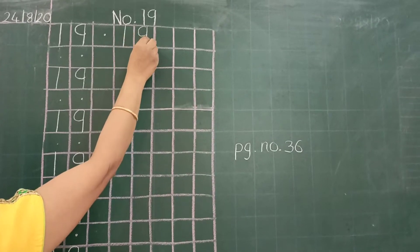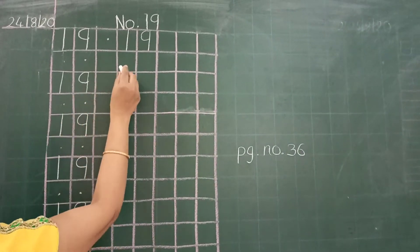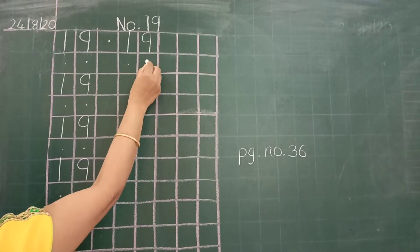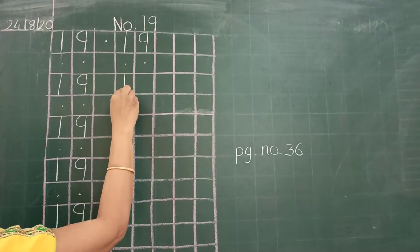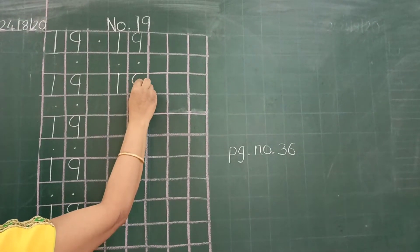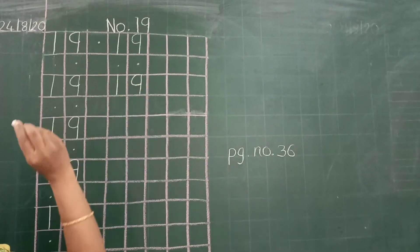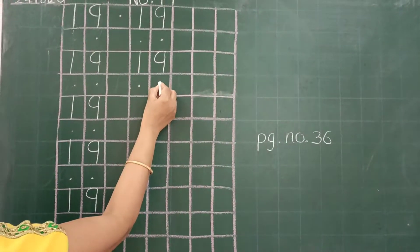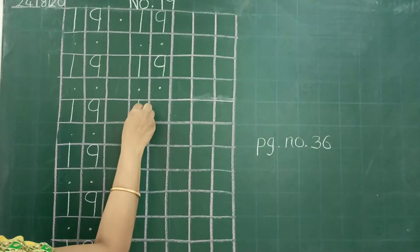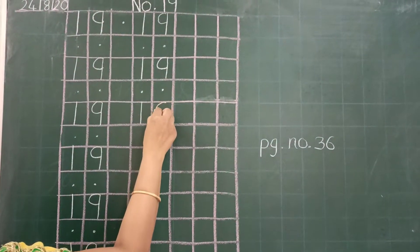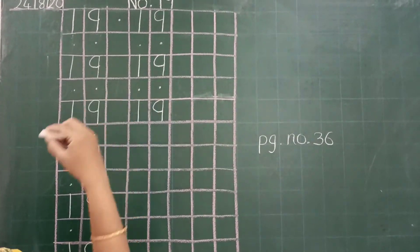See, 1, 9, 19. Then again leave these 2 boxes and write here 1 and 9, 19. Then give these 2 dots and again write numbers 1 and 9, 19.